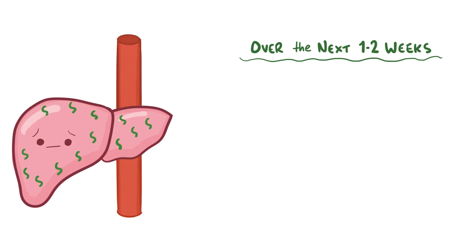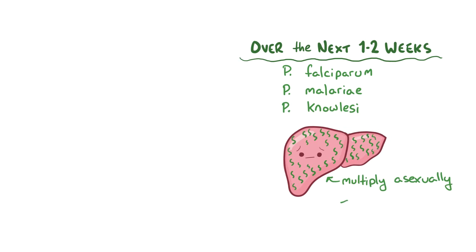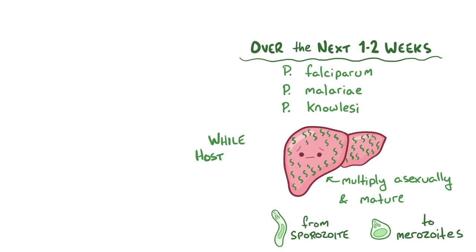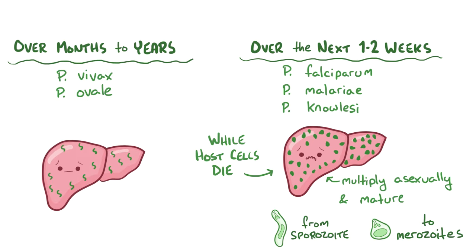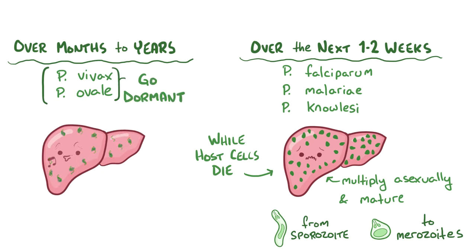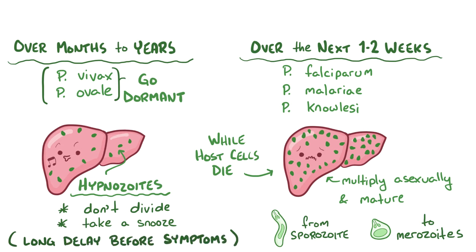At this point, the plasmodium species vary a bit. Over the next one to two weeks, Plasmodium falciparum, Plasmodium malariae, and Plasmodium knowlesi sporozoites multiply asexually and mature into merozoites, while host hepatic parenchymal cells die. In contrast, over the next few months to years, Plasmodium vivax and Plasmodium ovale sporozoites enter into a dormant hepatic phase, where they're called hypnozoites. Hypnozoites don't divide — instead they snooze for a period of time before entering schizogony, causing a long delay between the initial infection and symptoms.